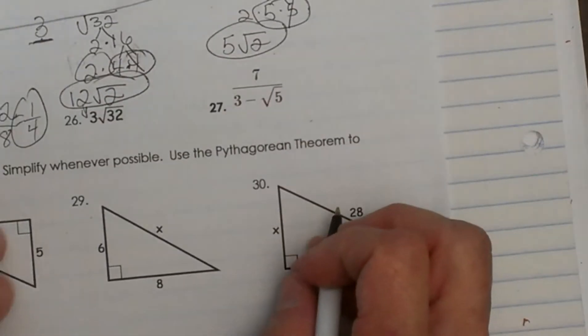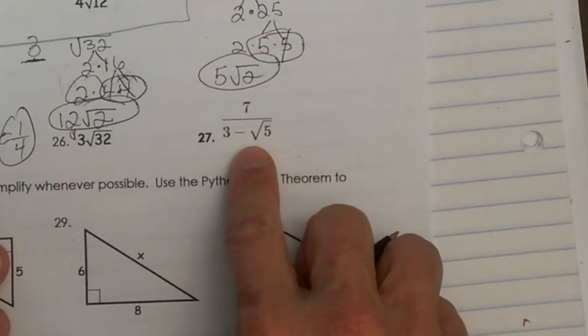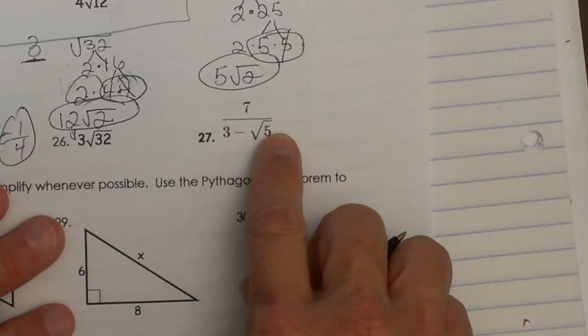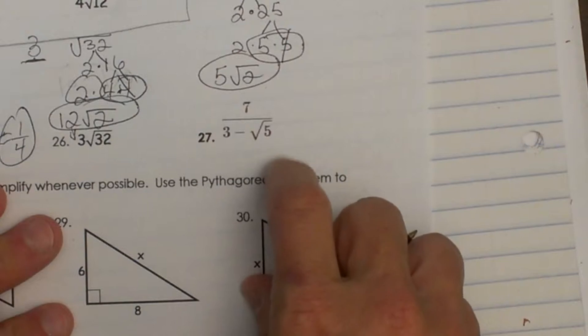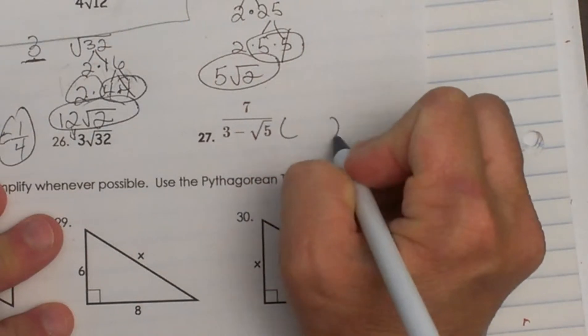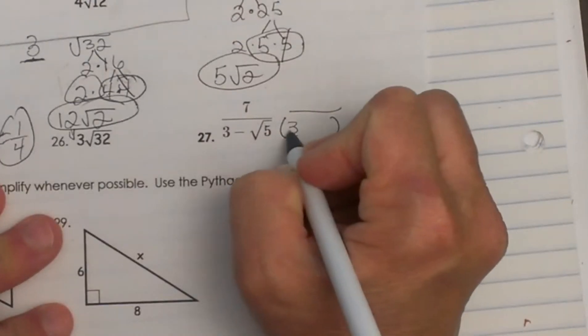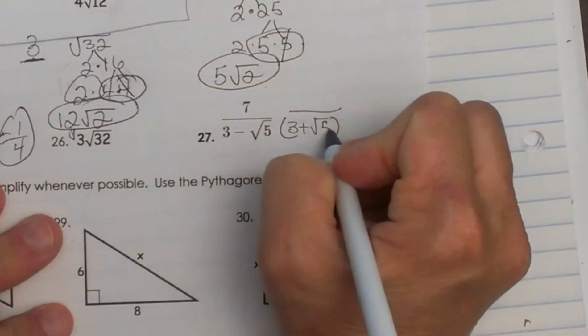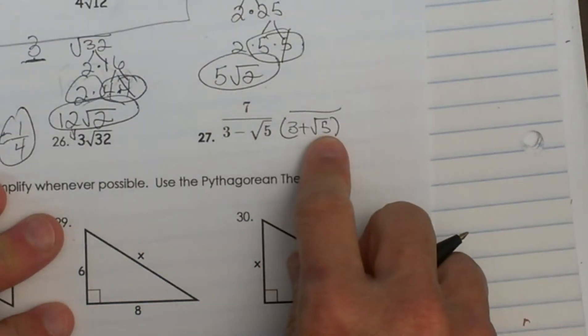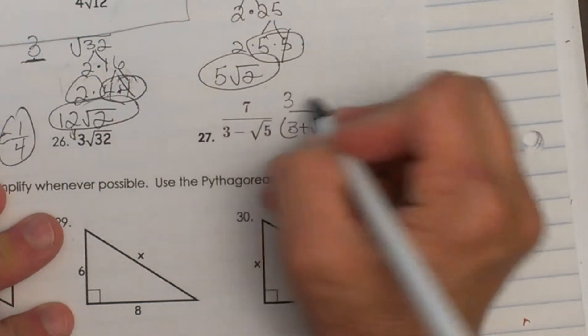Let's look at 27. We have to use conjugates. We have a square root in the denominator, and you can't leave a square root in the denominator. So typically you would just multiply by the square root of 5, but we've got 3 minus the square root of 5, so we have to multiply by its conjugate, which is 3 plus the square root of 5. Once we multiply the bottom by that, we have to multiply the top by that.